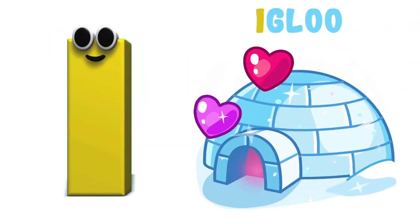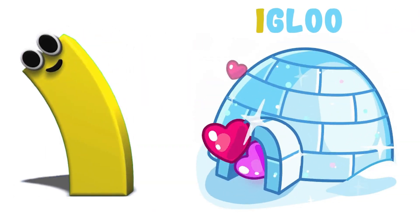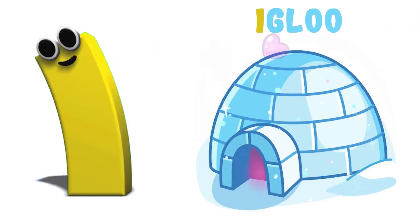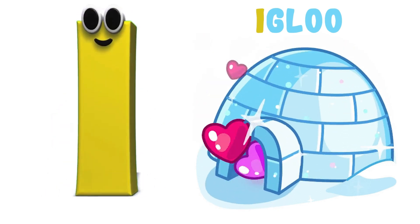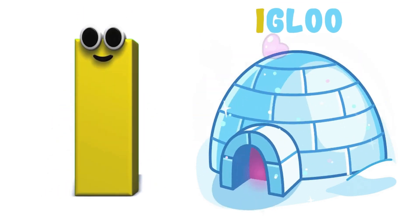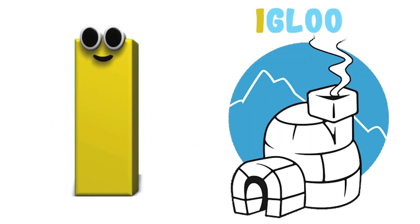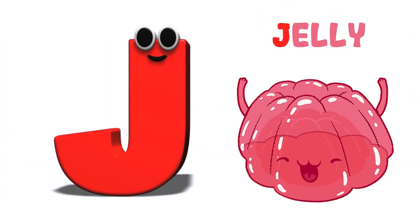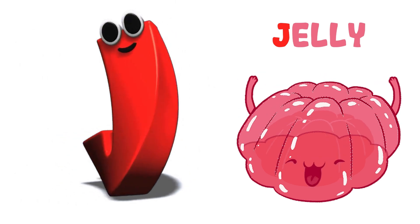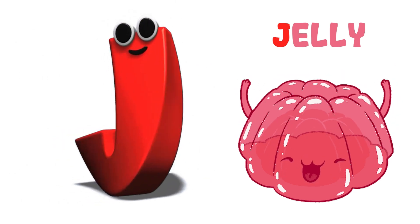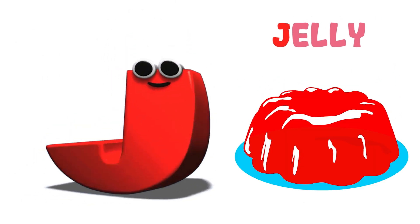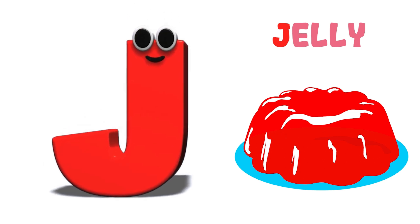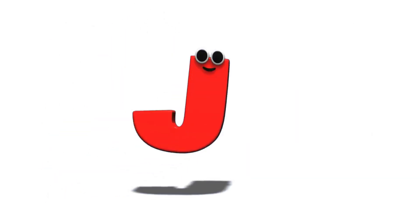I is for Igloo. E, E, Igloo. E, E, Igloo. I, Igloo. J is for Jelly. J, J, Jelly. J, J, Jelly. J, Jelly.